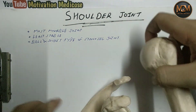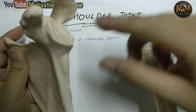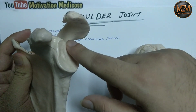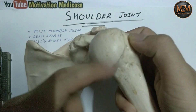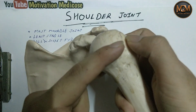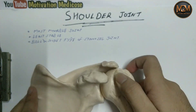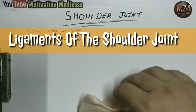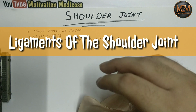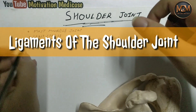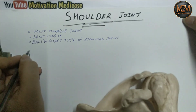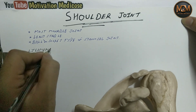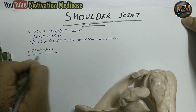The articular surfaces are: medially the glenoid cavity, and laterally the head of humerus. Now after this we will study the ligaments of the shoulder joint.